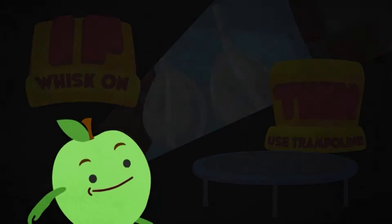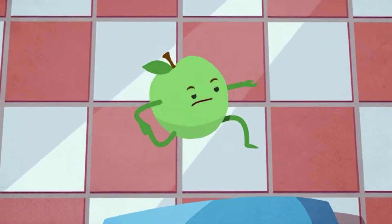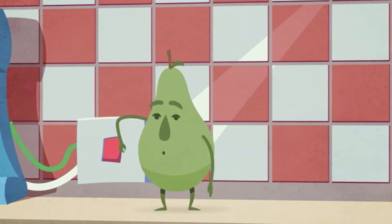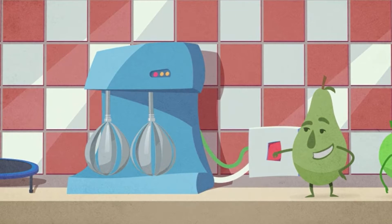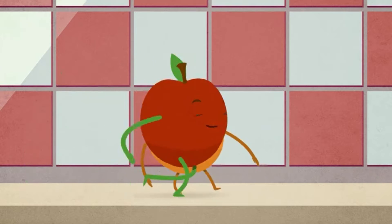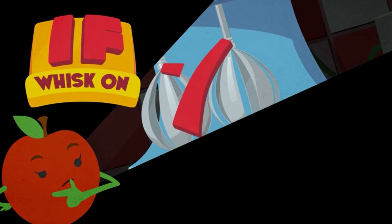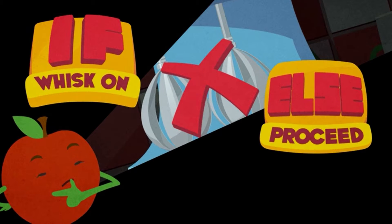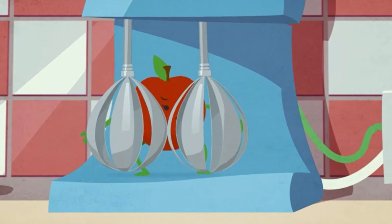The if/then part of the statement causes one path to be followed if the condition it relates to is true. The else part causes another path to be followed if the condition is false.